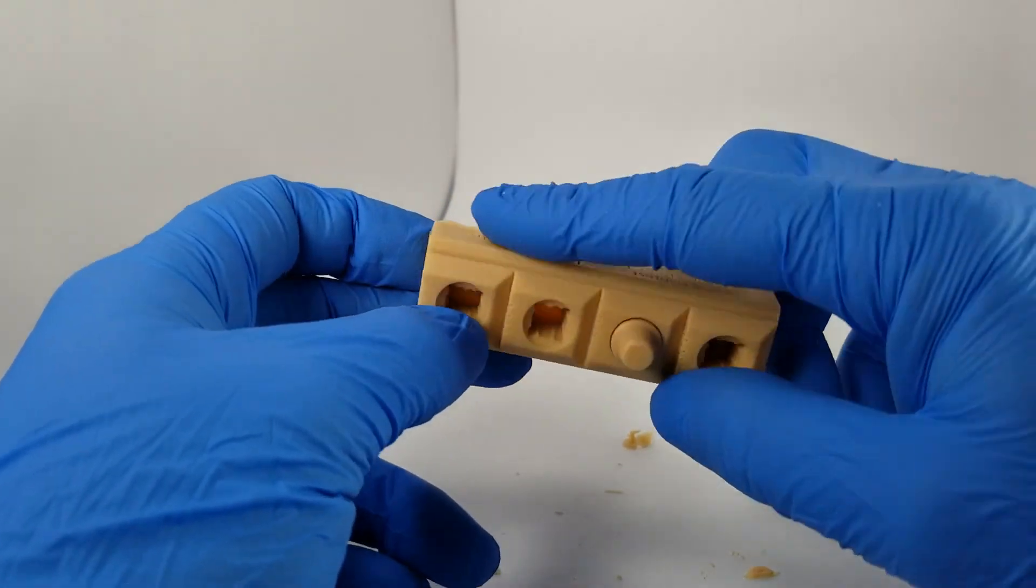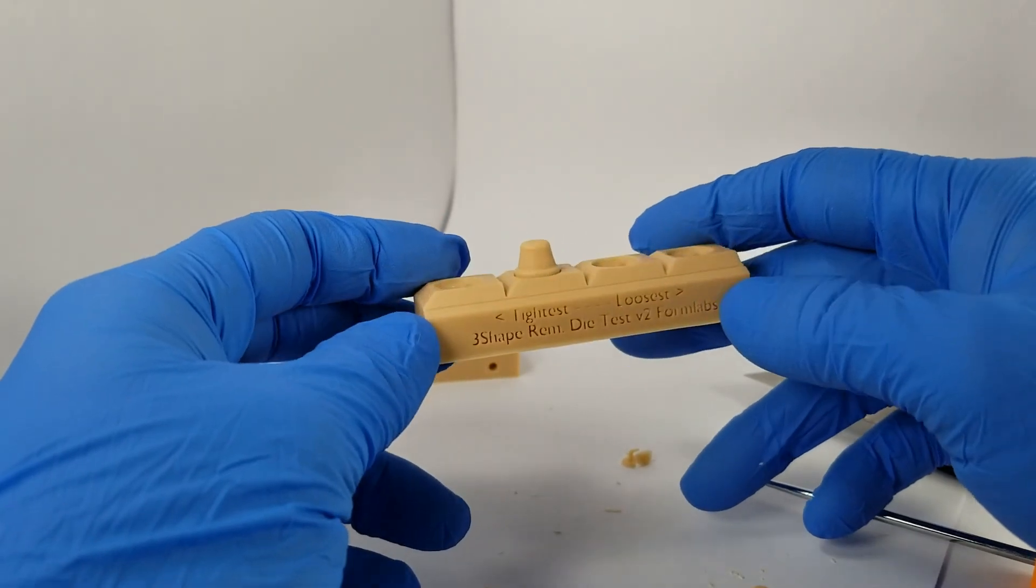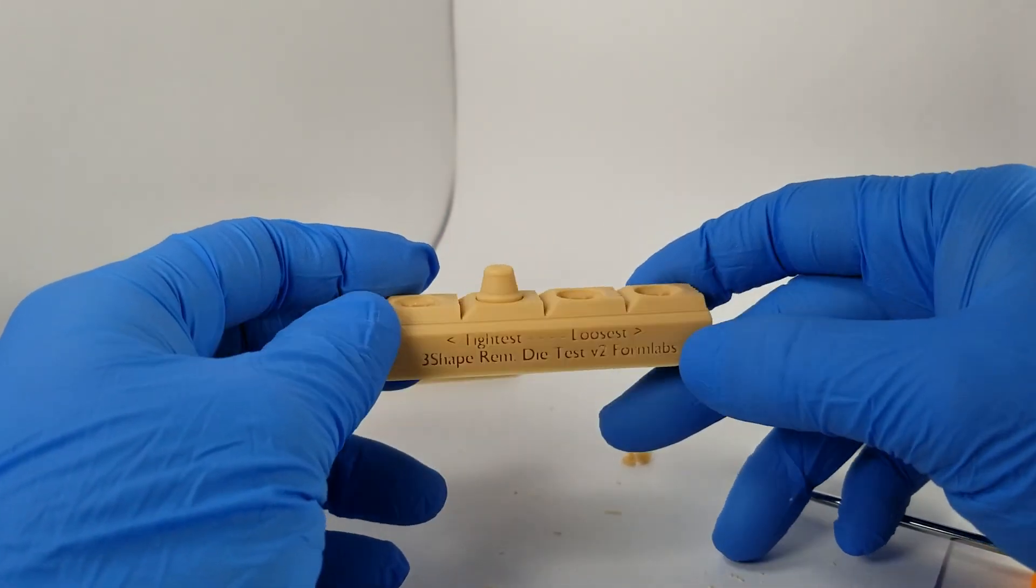So that's how to do die testing and tuning on the Form 3B for 3Shape. Thank you.